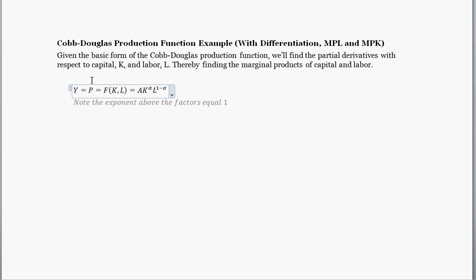Y here is output. I've occasionally seen it equal to P for production. However, in some courses P stands for prices, so you might not see that too often. You typically see Y — output — is equal to a function of something, in this case capital and labor.